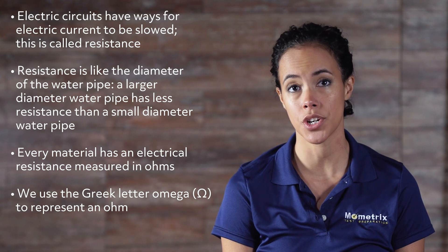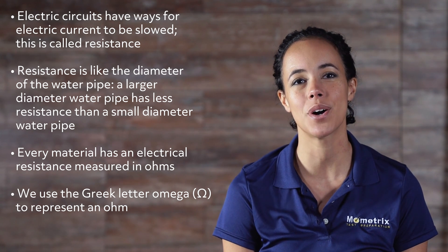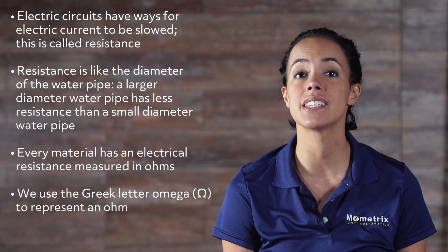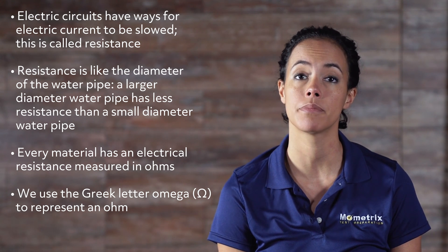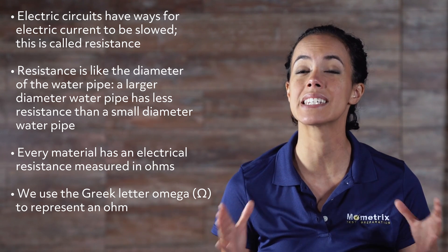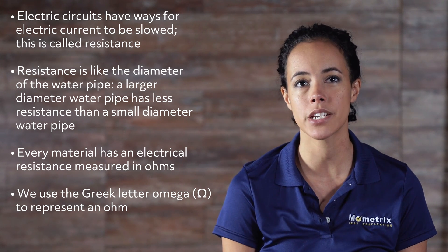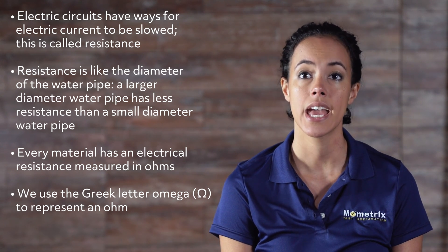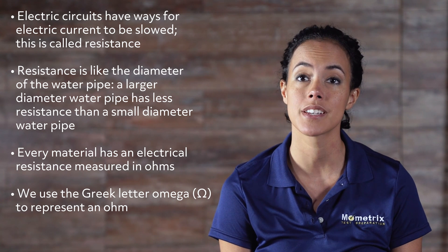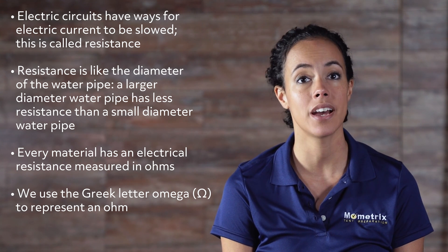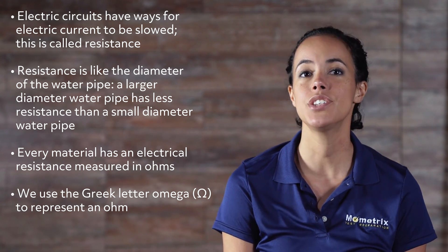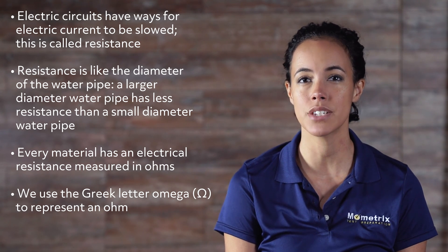Just like water pipes have ways for the water flow to be slowed, electric circuits also have ways for electric current to be slowed. This is called resistance. Resistance is like the diameter of the water pipe. A larger diameter water pipe has less resistance than a small diameter water pipe. Every material has an electrical resistance, and it is measured in ohms. We use the Greek letter omega to represent an ohm. This unit of measure tells us how easy it is for our electric current to move through the material.